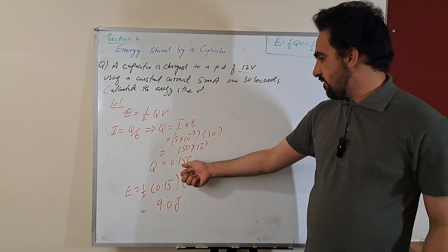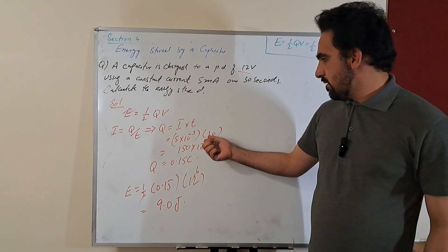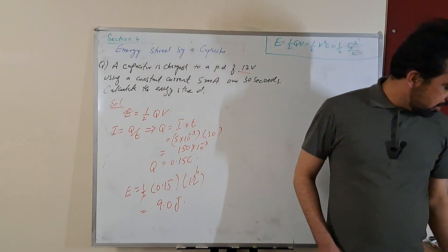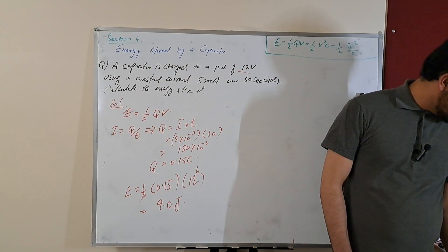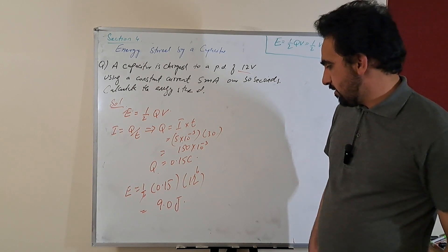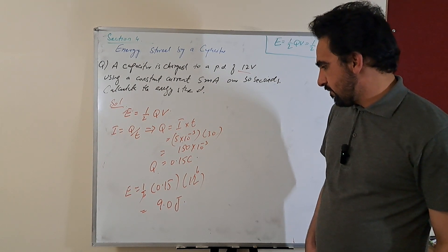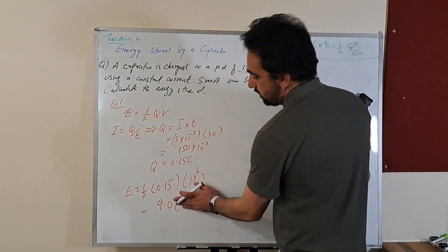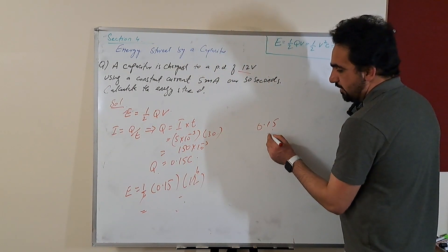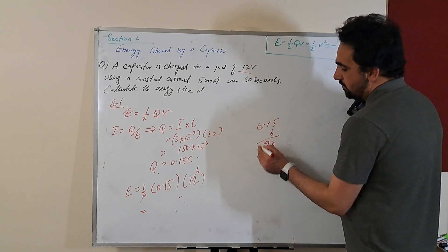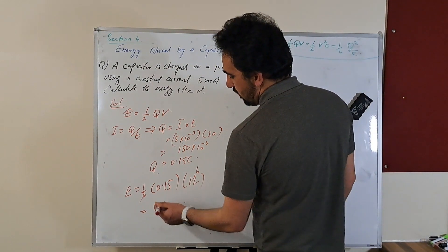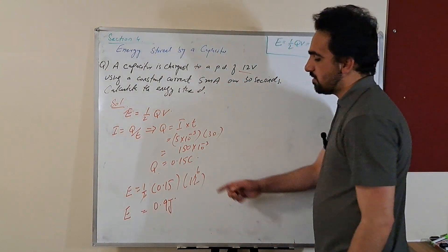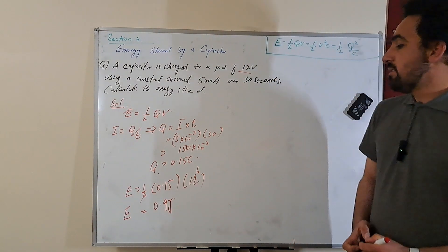Let me verify: 150 into 10 to the power minus 3 is 0.15 coulomb charge. And then 0.15 multiplied by 6 is 0.90, so 0.9 joule — not 9.0 joule. So 0.9 joule energy is stored by the capacitor. Sorry for the multiplication error.